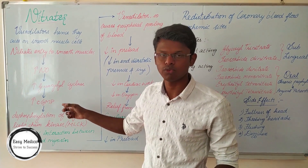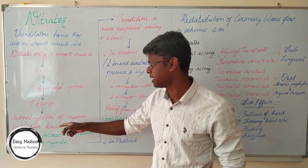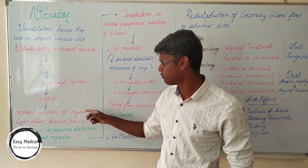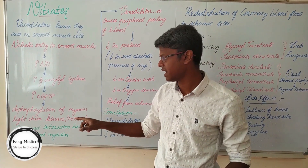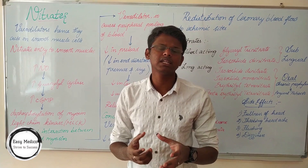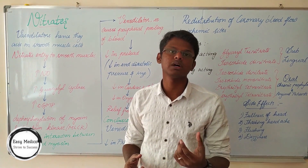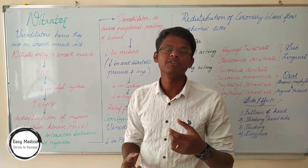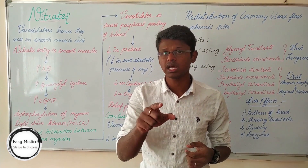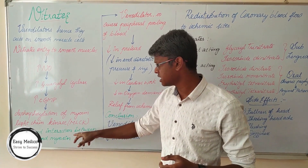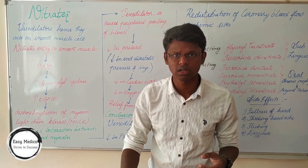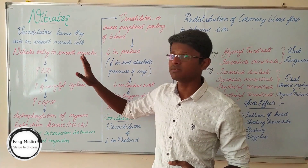This also leads to dephosphorylation of myosin light chain kinase, which is MLCK. This causes a decrease in the interaction between actin and myosin. Actin and myosin are proteins present in smooth muscle cells which are responsible for contraction. When the interaction between them decreases, contraction does not occur, so they will not cause a vasodilator effect.